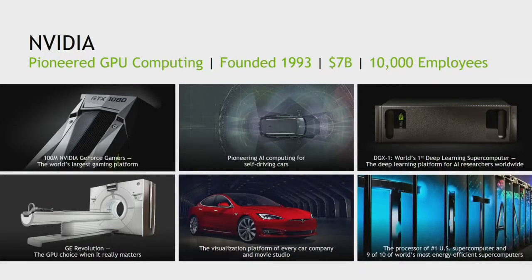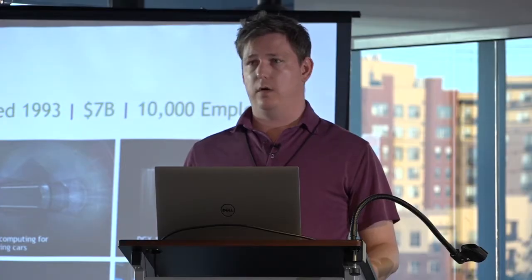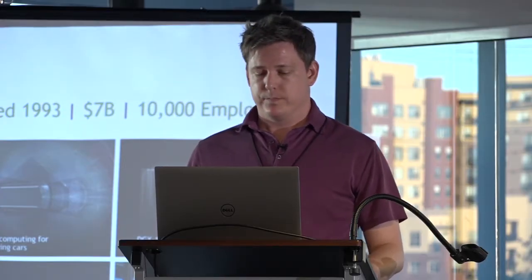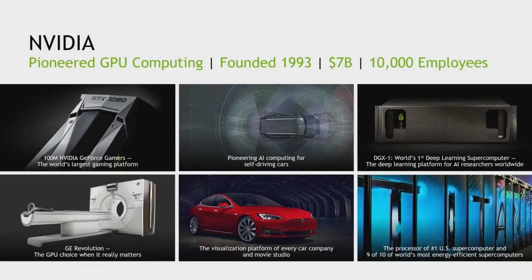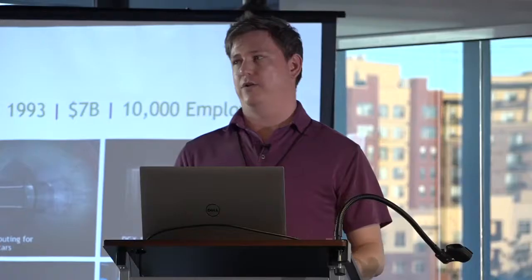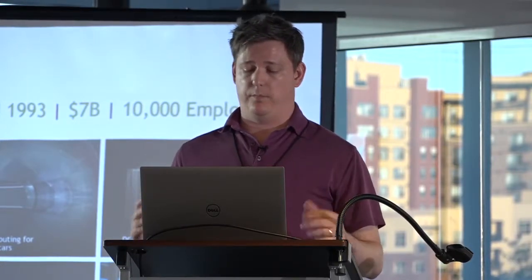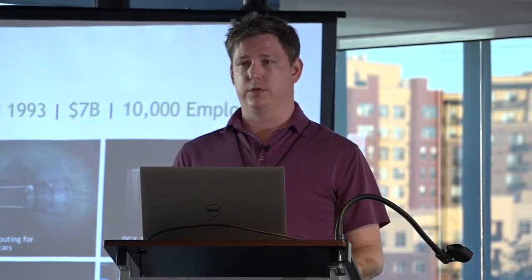We're also in some of the world's fastest supercomputers. As a company, we've decided to invest heavily in autonomous driving and self-driving cars, and we've partnered with almost every major car manufacturer. Down in the lower left, the GE Revolution CT scanner — using NVIDIA GPUs, they were able to lower energy usage by 89%, which actually reduces the amount of radiation that people have to expose themselves to when doing imaging.